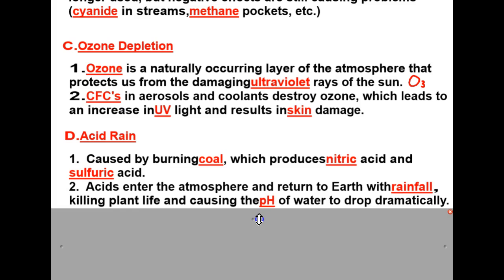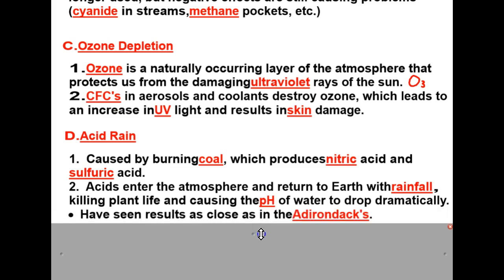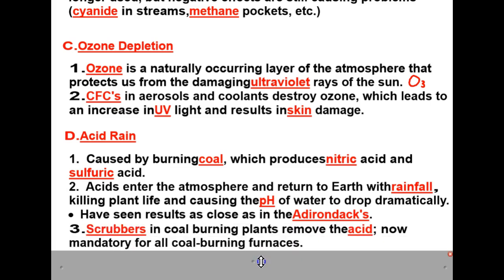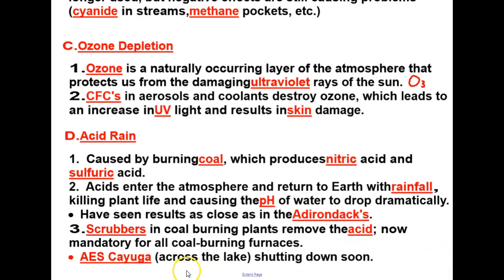You might remember that pH is a measure of how acidic or basic a substance is, and acids are on the low side of the pH scale. We have seen results of acid rain as close as our backyard up in the Adirondacks. Scrubbers on coal-burning plants remove the acid, which is now mandatory for all coal-burning furnaces — just like AES Cayuga on the other side of the lake, which is shutting down because it cannot keep up with the mandates for producing cleaner air.